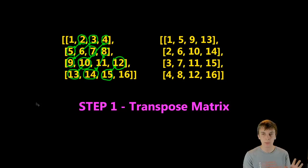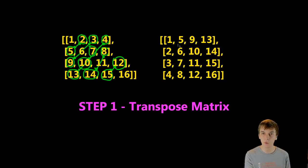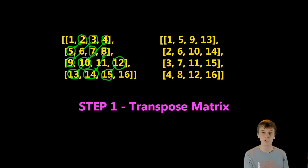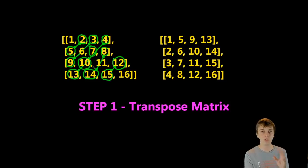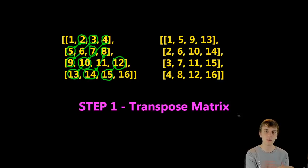Step one: transpose the matrix. We swap row-column with column-row, so everything gets swapped except the diagonal — position [0][0], [1][1], [2][2], [3][3] don't get swapped. We can see 2 and 5 getting swapped, 9 and 3 getting swapped, 10 and 7 getting swapped, 13 and 4 getting swapped, and so on. After all of these swaps, all of the rows become columns: the first row becomes the first column, the second row becomes the second column, and so on. So we're almost there — all we have to do is rearrange these columns, which leads us into step two.